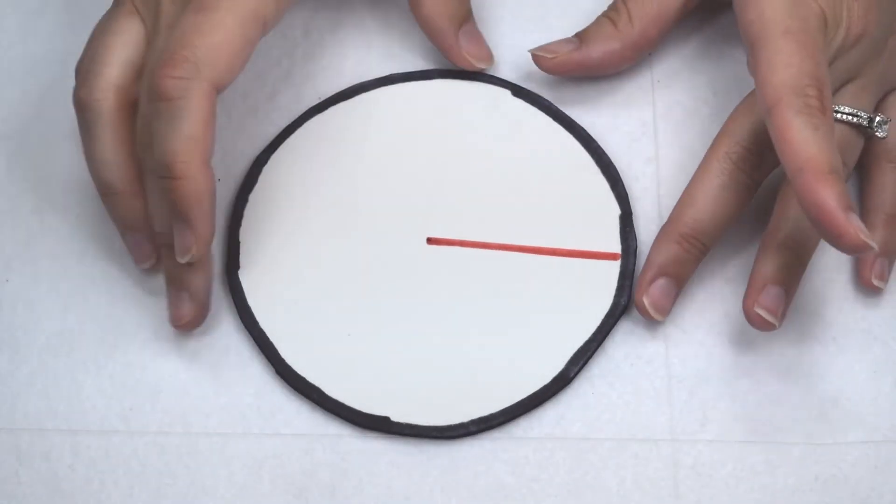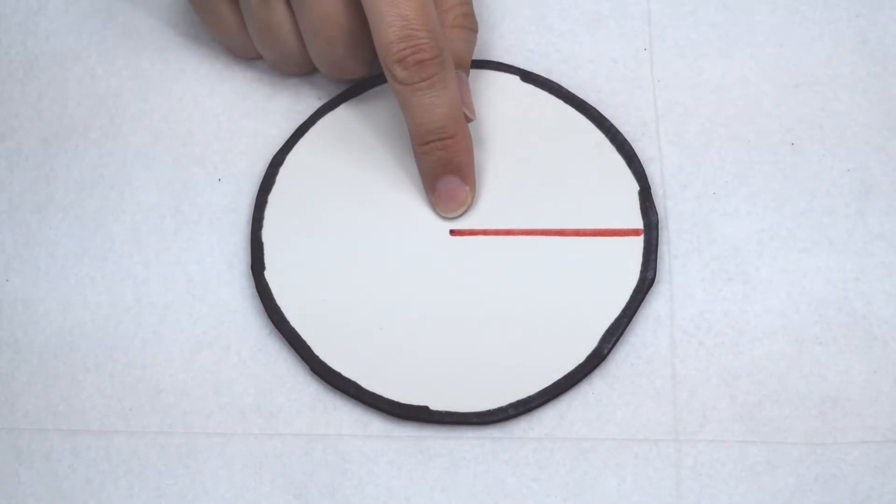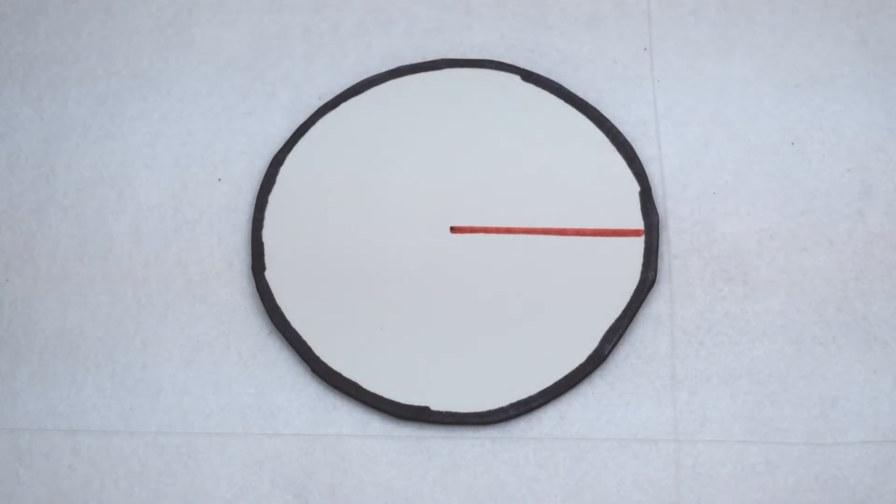When I start measuring on that circle, I can measure from the center point. If I measure from the center point to the outside edge of the circle, I've measured the circle's radius. We can abbreviate radius using a lowercase r.